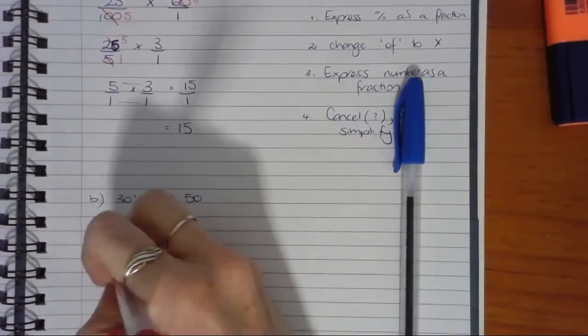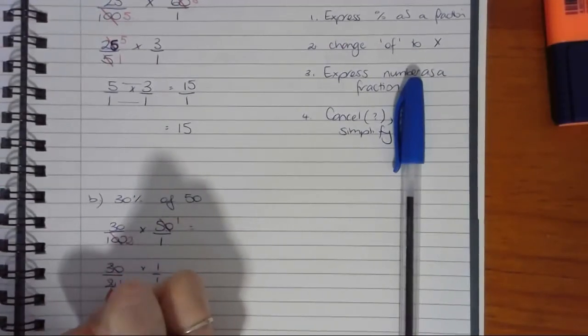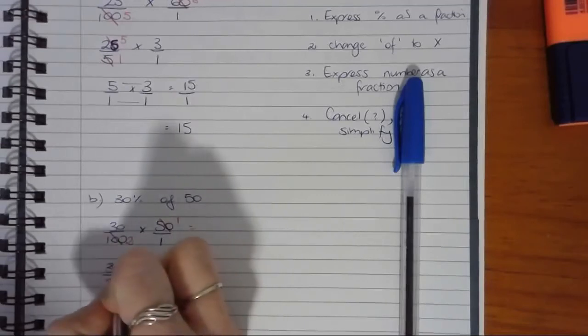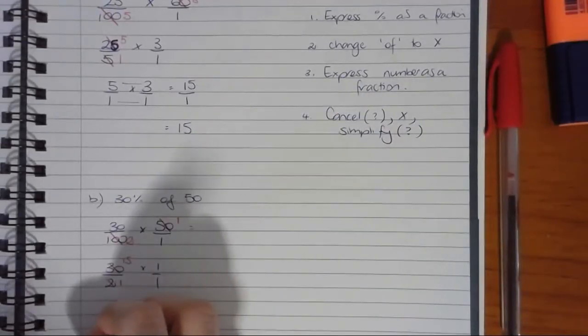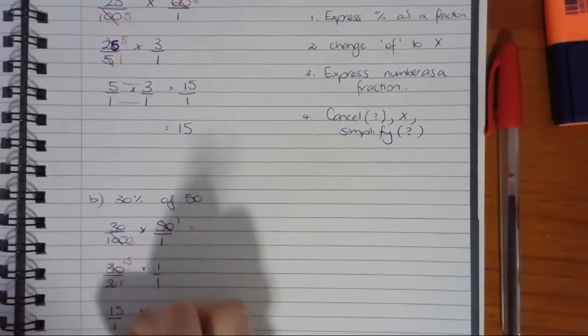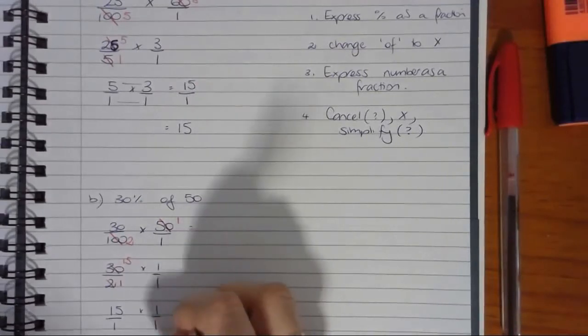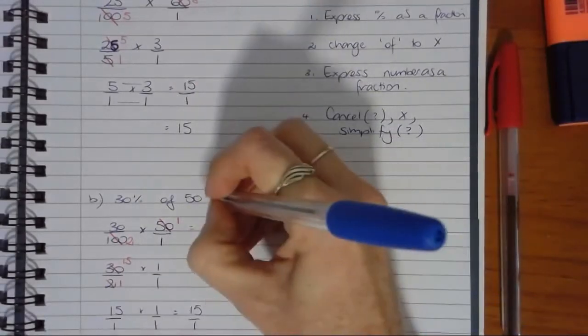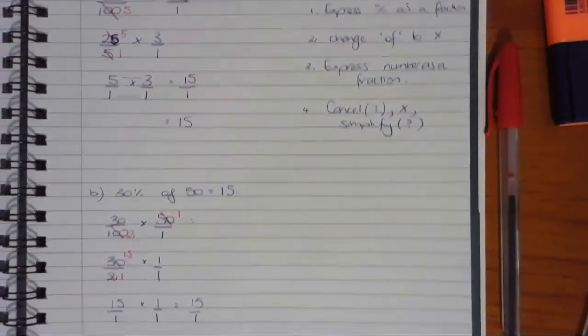Now I can cancel here too. If I go with the number 2, that leaves 1 here - 2 goes into 2 once, 2 goes into 30 fifteen times. And look how easy that is now. 15 over 1 times 1 over 1 equals, multiplying across, 15 over 1. So just by chance, it's also 15.